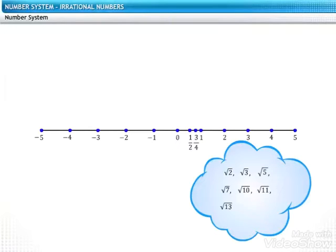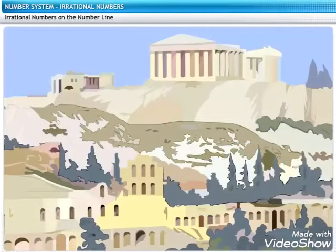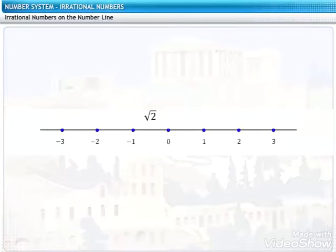Next, let's see where these numbers can be placed on the number line. We'll begin with the representation of square root 2 on the number line. The method that we are about to discuss was discovered by the Greeks. Let's see how they represented these numbers on the number line.